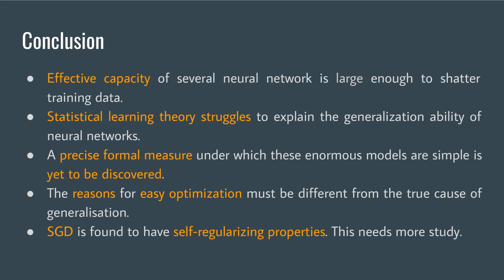On a concluding note, the findings imply that models are rich enough to memorize training data, and the traditional view is incapable of explaining the generalization ability of neural networks, whereas SGD is found to have self-regularizing properties. This shows that a precise formal measure is yet to be discovered.